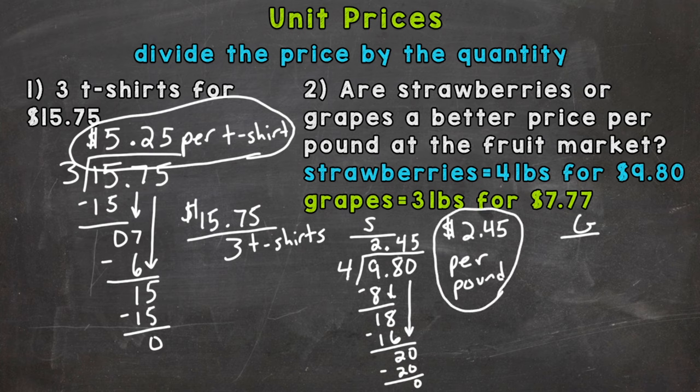Let's check grapes now. So grapes are $7.77 and that is for 3 pounds. So now let's divide. 7 divided by 3, we get 2. 2 times 3 is 6, subtract, bring down. 17 divided by 3, how many whole groups of 3 out of 17? Well 5. 5 times 3 is 15, subtract we get 2.